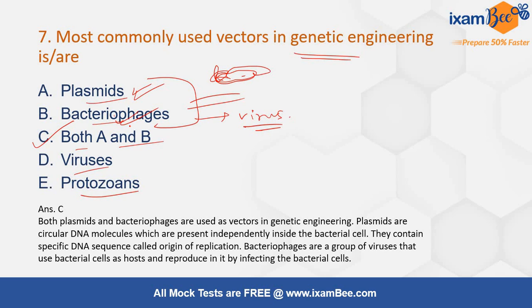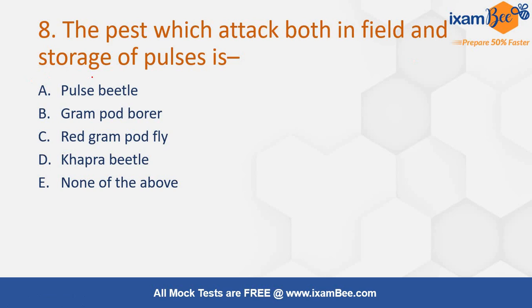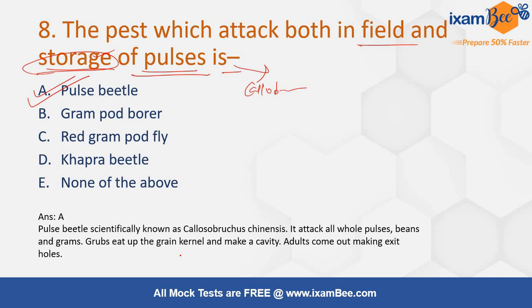The next question is: the pest which attacks both in the field and storage of pulses is? The correct answer is the pulse beetle, which is a very popular stored pest that can also attack pulses in the field. Its scientific name is Callosobruchus chinensis and it belongs to the Bruchidae family. The grubs eat the grain kernel, making a cavity, and adults emerge from exit holes, leaving visible holes in the grain.